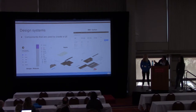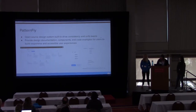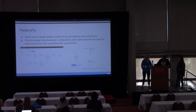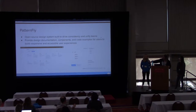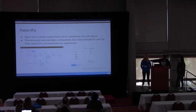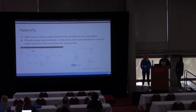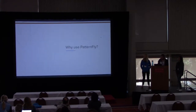Red Hat has its design system that it uses across its products and it's called PatternFly. It's an open source design system built to drive consistency and unify teams, and it provides design documentation, components, and code examples for users to build responsive and accessible user experiences. Some of those components are shown on the right — dropdown menus, buttons, chips that form a chip group — and we would use those components to build the screen on the left.